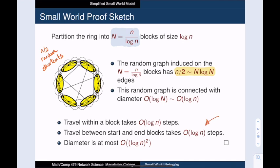Now, in order to get from one random shortcut to another, we're also going to have to traverse within blocks. But each block has size log n, so it takes at most log n steps to navigate within a block. To find our total path size, we just multiply these two numbers together, and we find that the diameter of our graph is at most log n squared. And this confirms that our small world is indeed small.